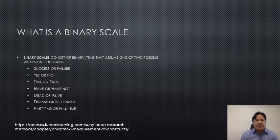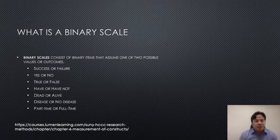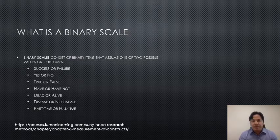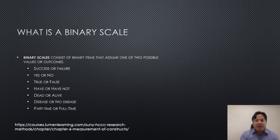Binary scales are those that consist of binary items that assume one of two possible values or outcomes. For example, you can have success or failure, yes or no, true or false, disease or no disease. For employment, you can have part-time or full-time. However, if an employment status item is modified to allow more than two possible values, such as unemployed or retired, it is no longer a binary scale, but it will remain as a nominal scale item.